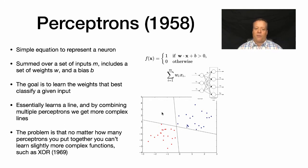For things like a simple linear classifier, this worked very well. Essentially it learns a line, and by combining multiple perceptrons, we can get multiple lines together. The problem is no matter how many perceptrons you put together, there are slightly more complex functions that you can't classify very well. You can't classify for instance what's called an XOR function. That was discovered in 1969.